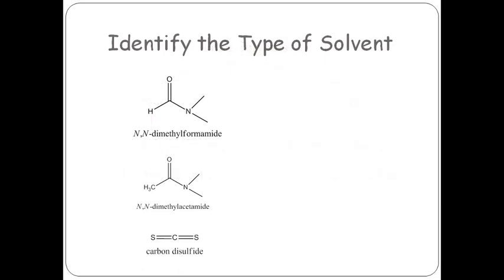Now let us do the exercise: identify the type of solvent. On the screen you can see the molecule of N,N-dimethylformamide (DMF). Looking at this structure, carbon is attached to the more electronegative oxygen and more electronegative nitrogen, and there is no proton attached to these electronegative atoms — therefore it is an aprotic solvent. Due to the electronegative oxygen and nitrogen, it becomes polar. So the inference is: this is a polar aprotic solvent.